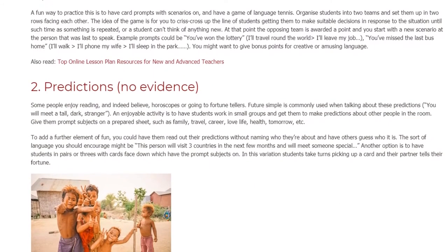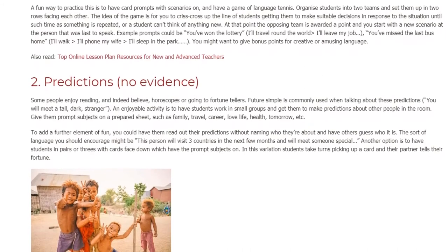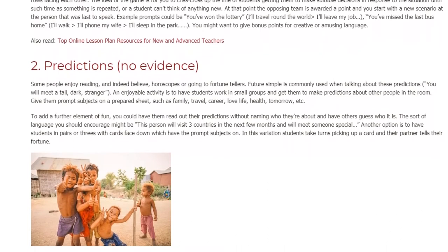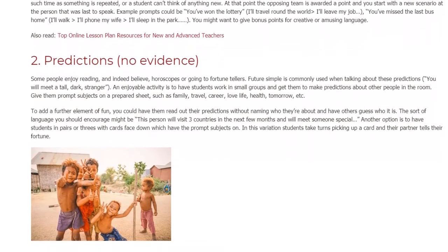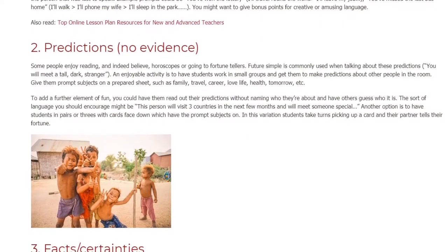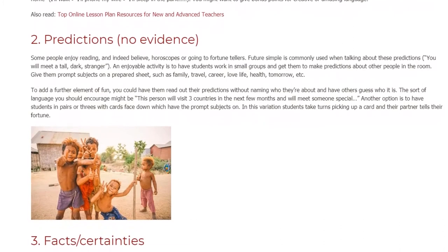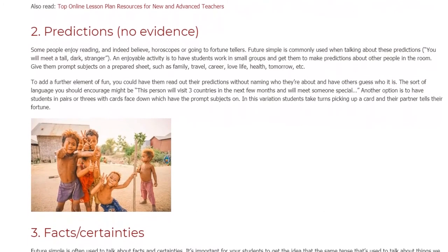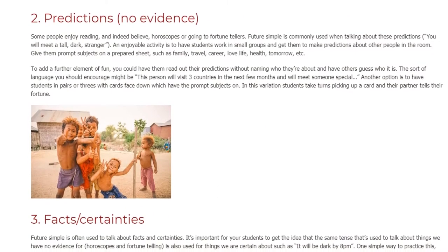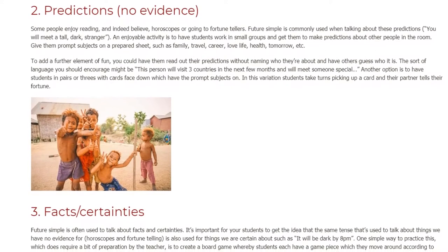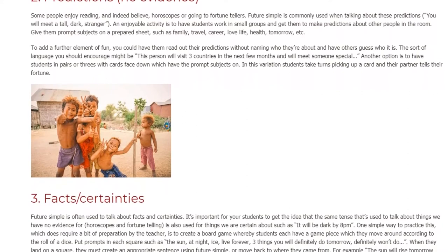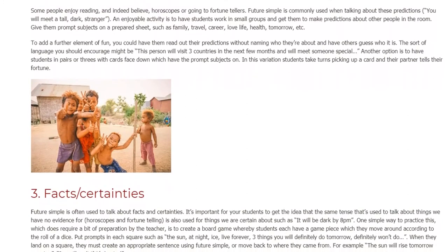Give students prompt subjects on a prepared sheet, such as family, travel, career, love life, health, tomorrow, etc. To add a further element of fun, you could have them read out their predictions without naming who they're about and have others guess who it is. Encourage language like: 'This person will visit three countries in the next few months and will meet someone special.' Another option is to have students in pairs or threes with cards face down showing the prompt subjects — students take turns picking up a card and their partner tells their fortune.